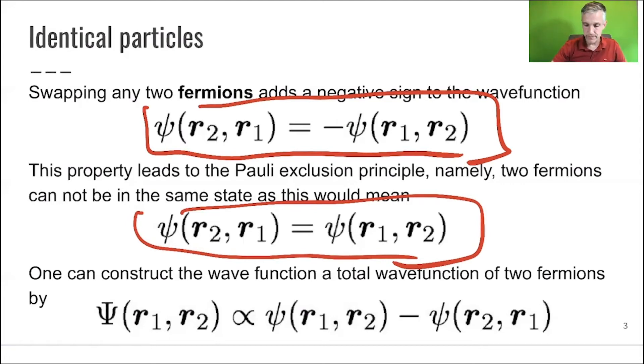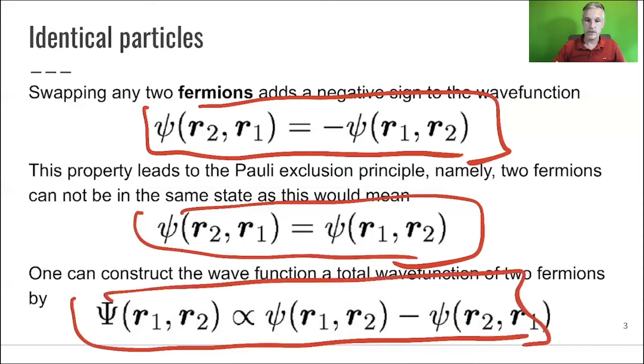Constructing a wave function or a total wave equation for the fermions is not that hard. You can simply do this by this construction.